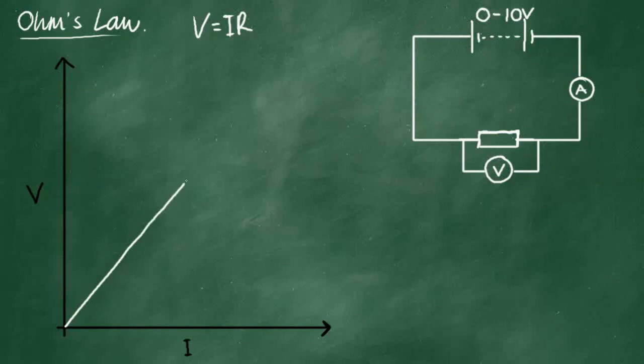And we should end up with a straight line graph like this. And this straight line graph is Ohm's Law. It shows that voltage is proportional to current. That is Ohm's Law. You can get a lot more out of it, though.